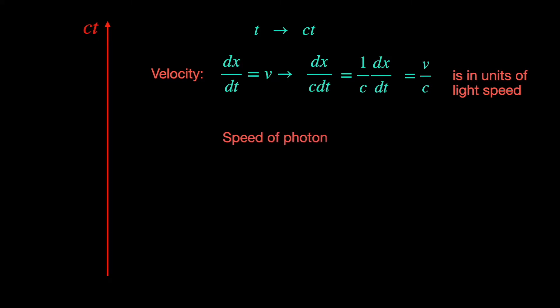So speed of a photon should be unity. Now speed is given by the slope of the world line with the vertical time axis of the rest frame.